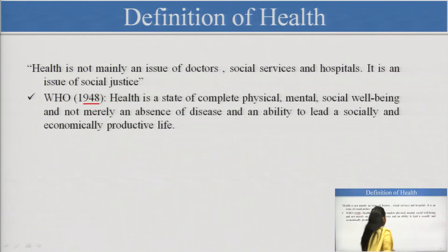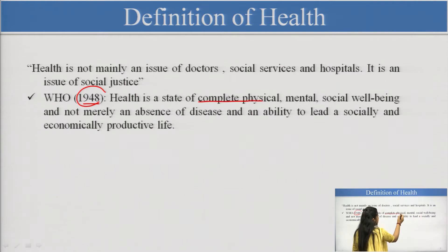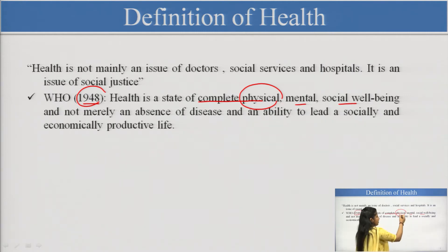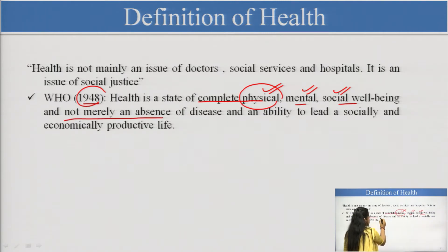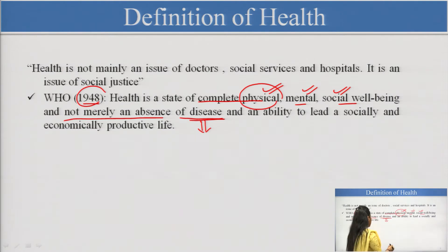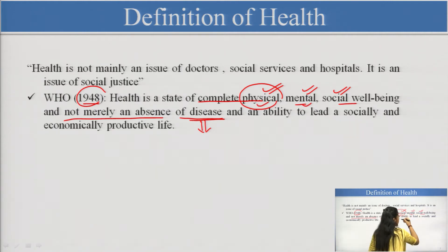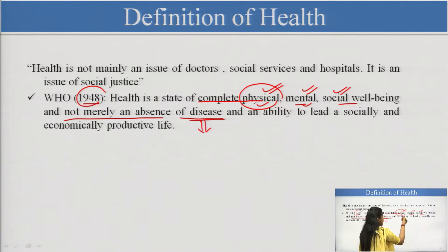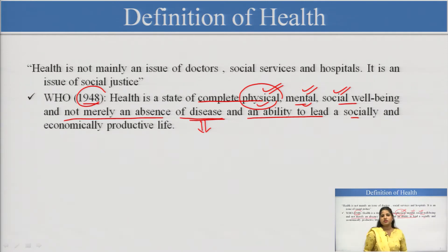This definition was provided by WHO in 1948. According to this, health is a state of complete physical, mental, and social well-being, and not merely an absence of disease. This point should be noted — whenever we say a person is healthy, we are not saying it as the absence of disease, but they should have the physical, mental, and social parameters taken care of, plus an ability to lead a socially and economically productive life.